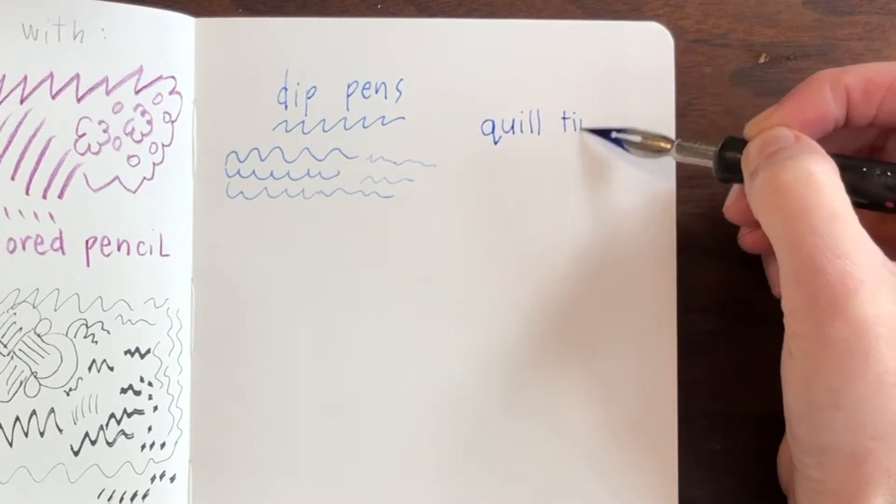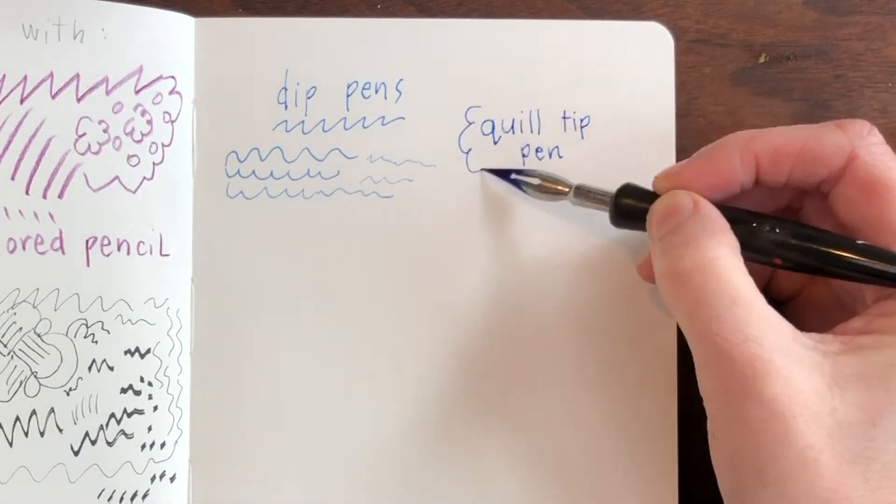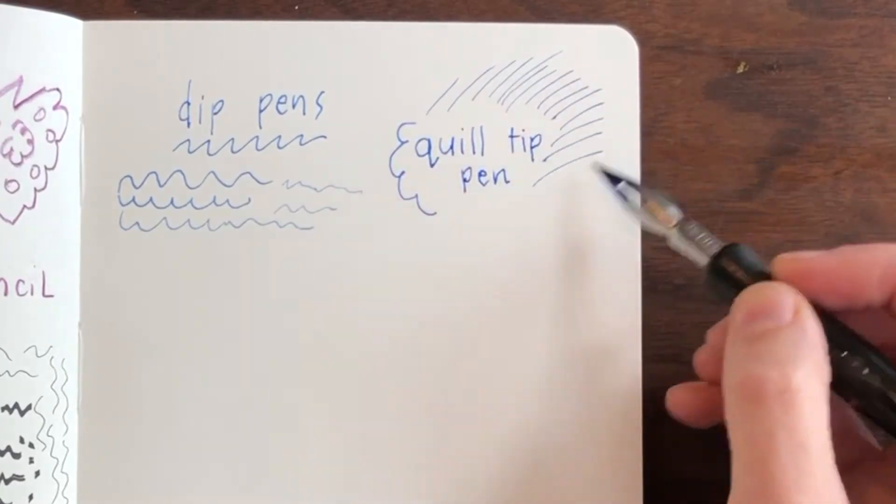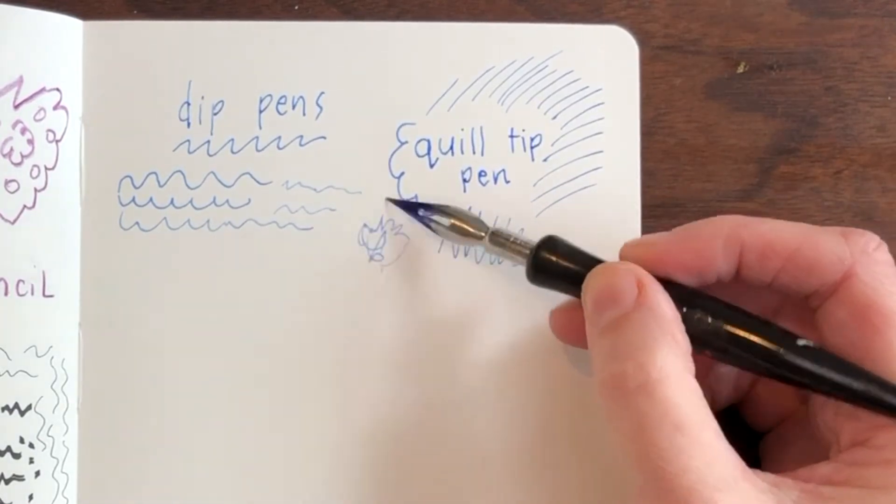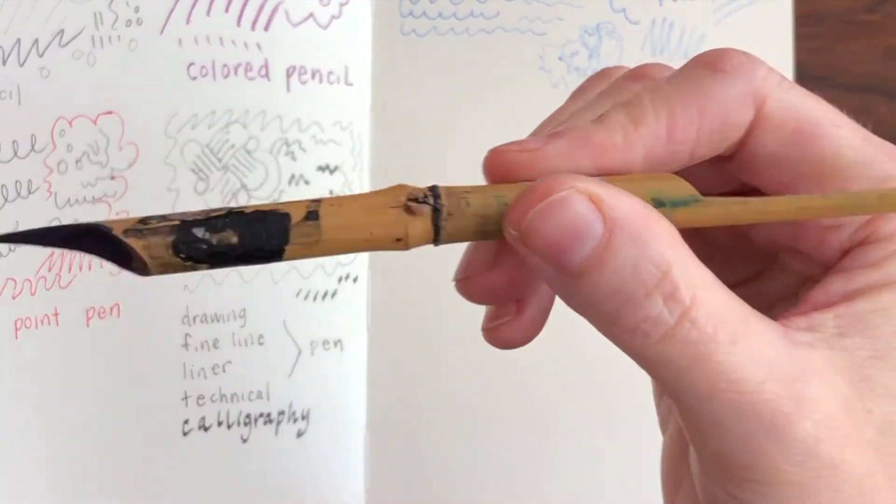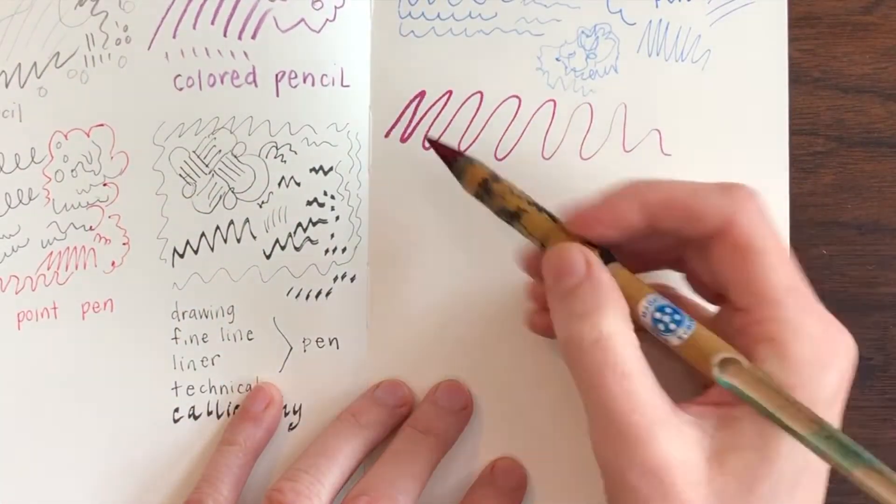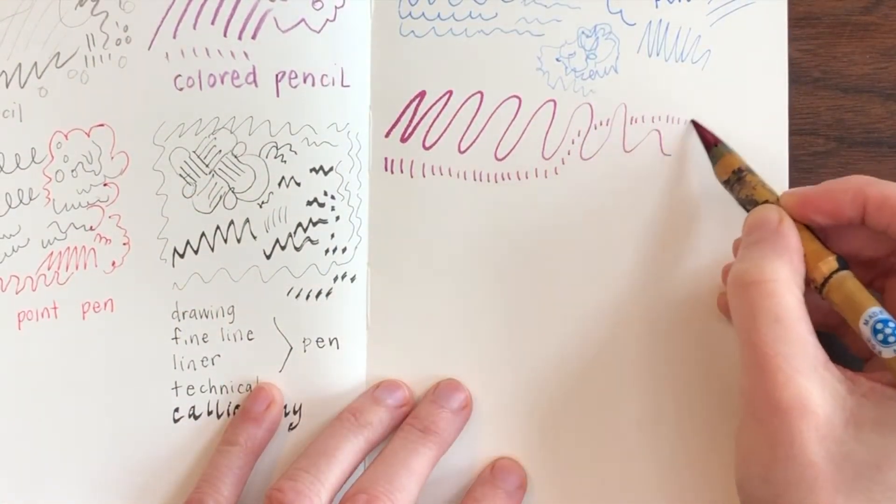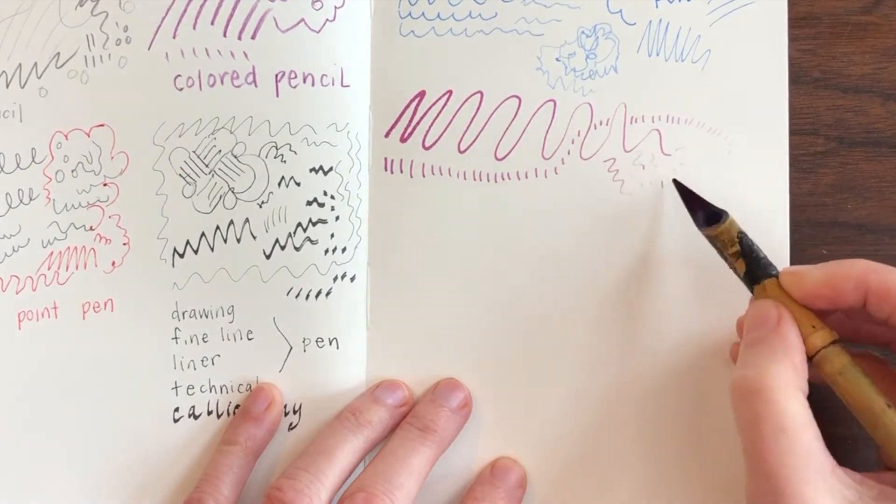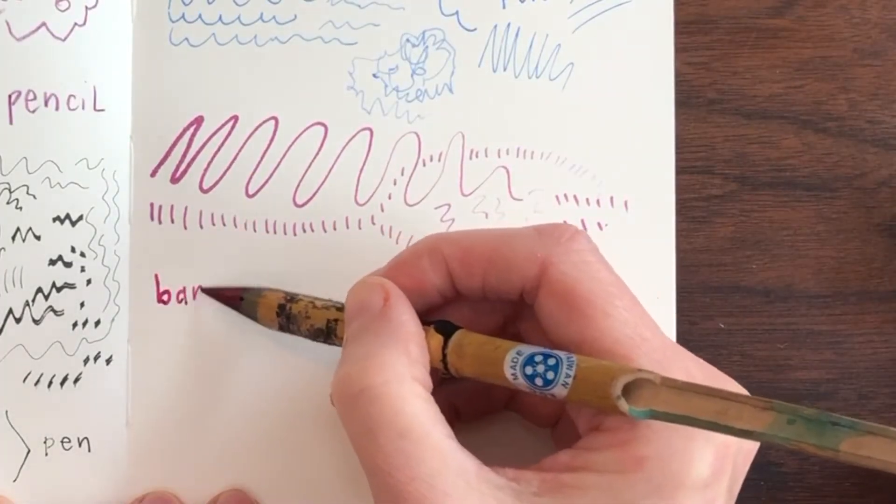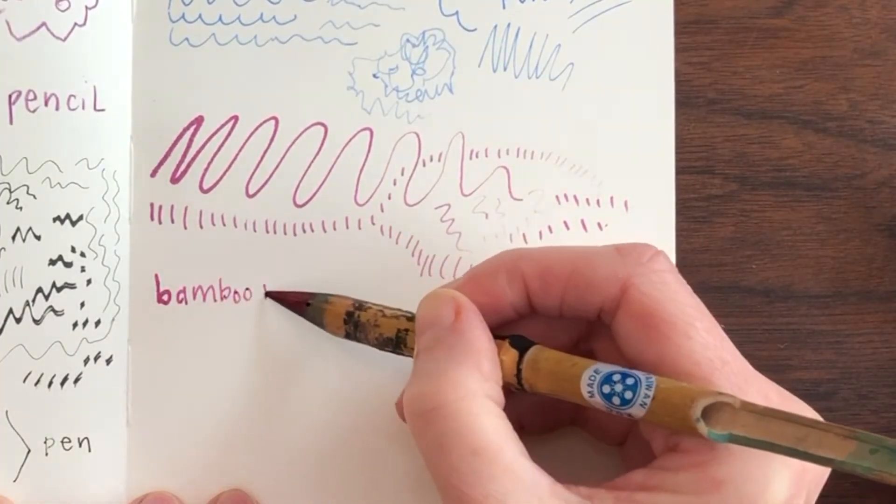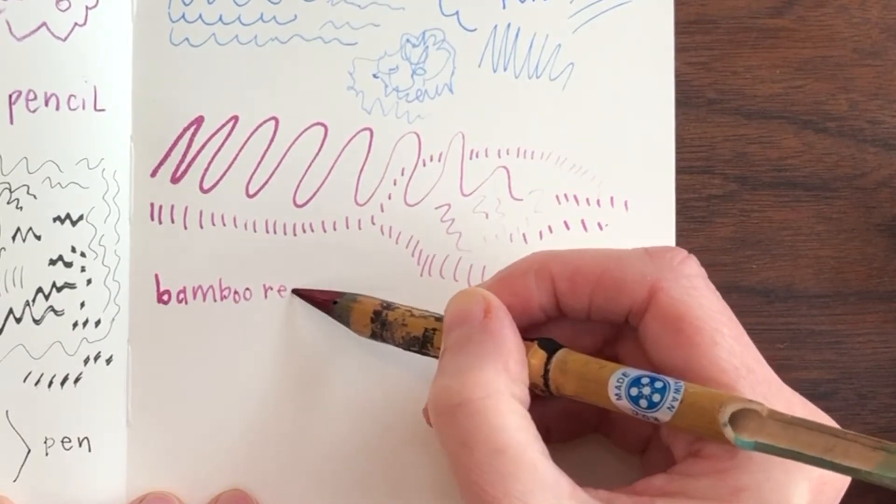This pen is called a quill tip pen and it makes really fine lines and you can draw until you run out of ink. This pen is like the quill tip pen but it's made from bamboo. The ink comes out a little bit thicker at first but as it runs out of ink the line gets thinner. This is called a bamboo reed pen.